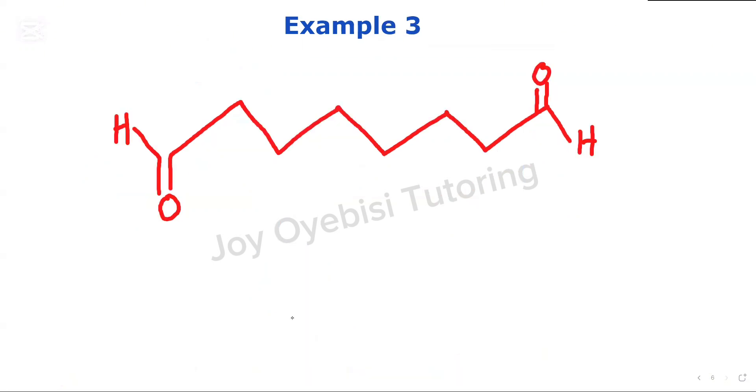The last example I have, you're given a compound that has two aldehyde functional groups. So we're going to start counting from any of them. It doesn't matter. They are both terminal. So I'm going to start from my left. This is carbon 1, 2, 3, 4, 5, 6, 7, 8. That is the longest continuous carbon chain. There is no substituent and there are no other functional groups for this one. So I'm going to go ahead and start naming.